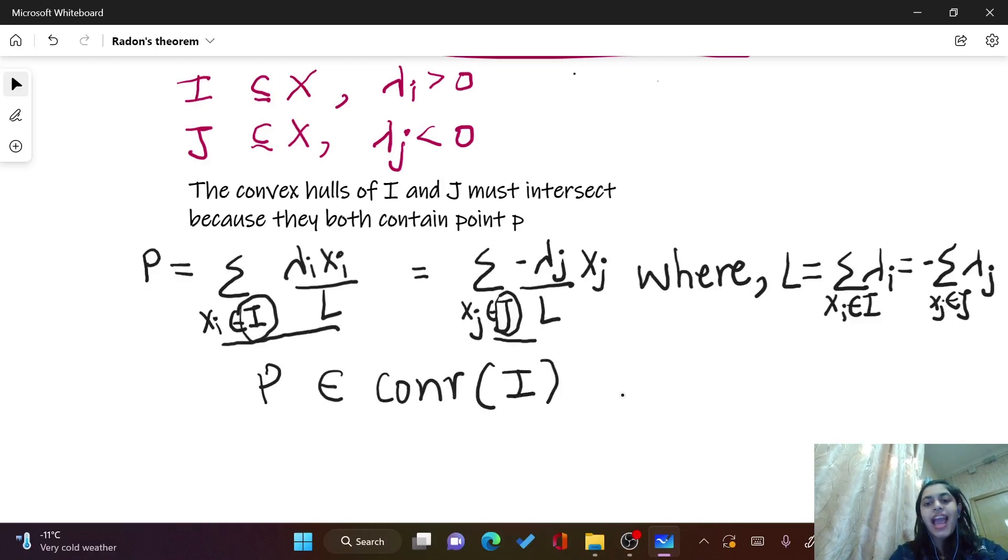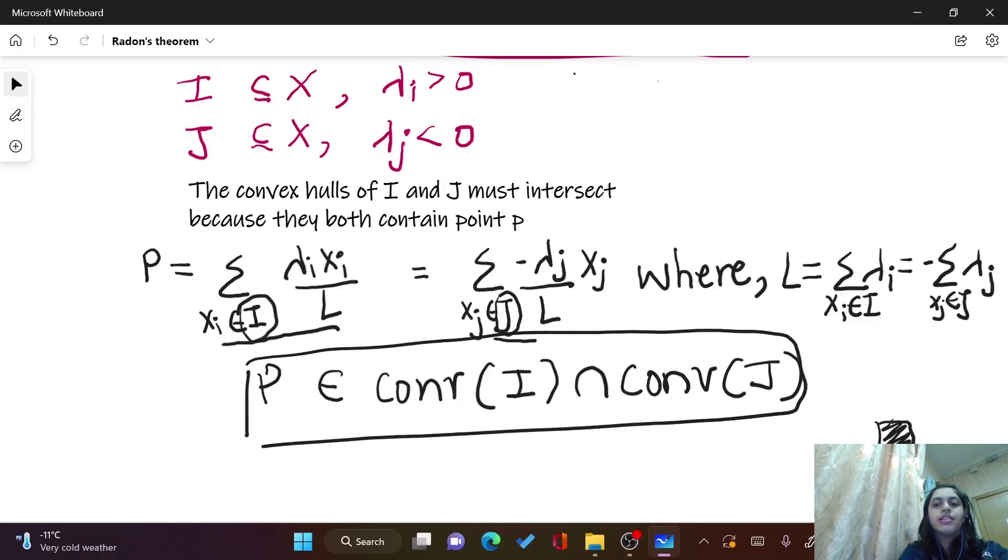P is in both the sets I as well as J, which is basically what we wanted to prove. Since we can express a point P such that it is in both sets I and J, therefore we proved our theorem, and we have a point which belongs to the convex hull of both the sets.